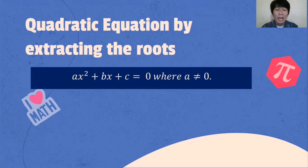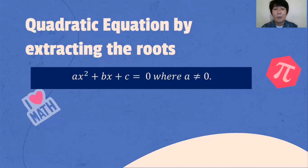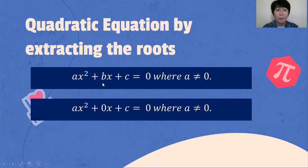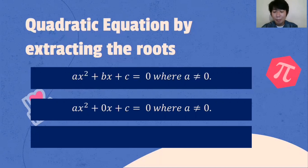When do we use quadratic equation by extracting the roots? As we all know, we have the standard form AX squared plus BX plus C is equal to 0, where A should not be equal to 0. We will be using this method when there is no value for B, when the value for B is 0. That means we only have AX squared plus C is equal to 0.